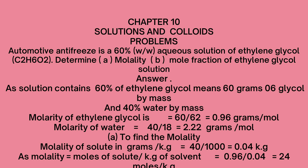Now we have to find molality. The mass of solvent in kilograms: 40 grams of water divided by 1000 equals 0.04 kilograms. Molality equals moles of solute divided by kilograms of solvent, so 0.96 divided by 0.04 equals 24 moles per kilogram. This is the molality of the 60% weight by weight aqueous solution of ethylene glycol.